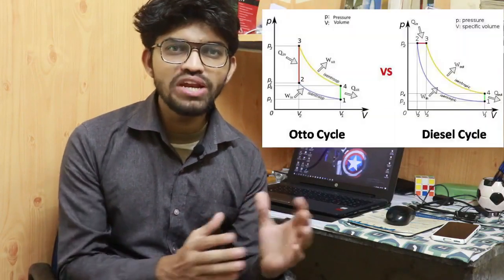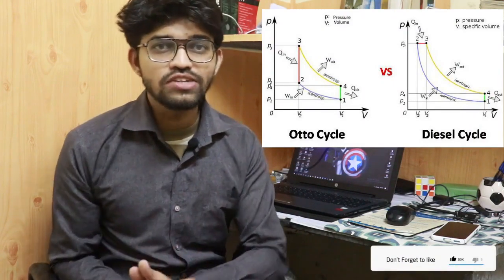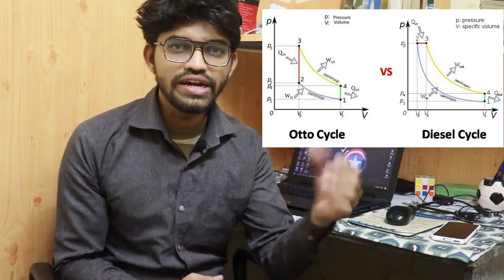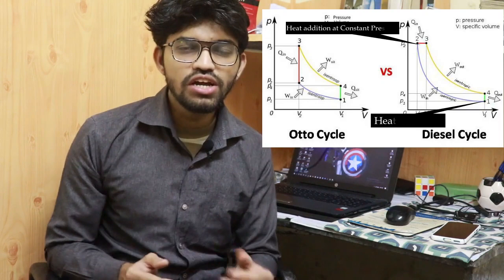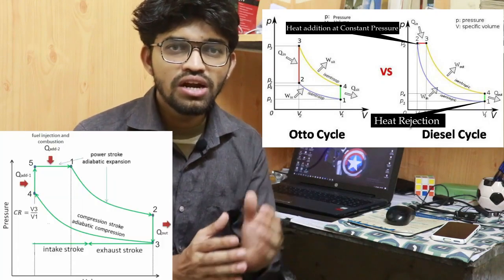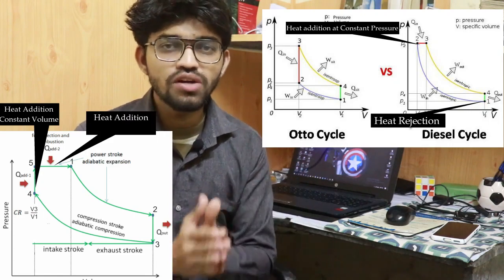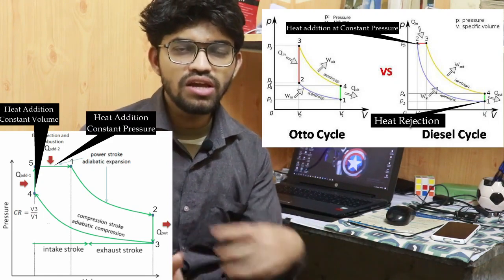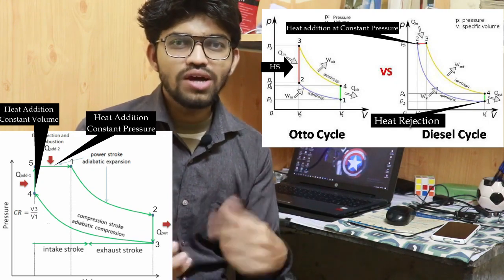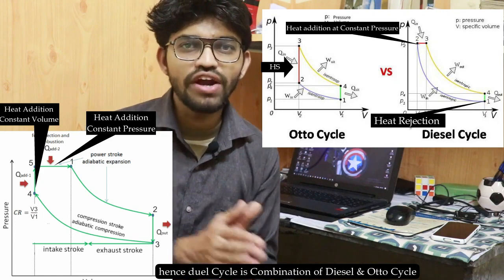The dual cycle is the combination of the Otto cycle and the Diesel cycle, and can also be considered as a modification of the Diesel cycle — which is why it is sometimes called the semi-diesel cycle. In the Diesel cycle, heat gets added during constant pressure and rejected during constant volume. In the dual cycle, the heat addition part is modified: heat is first added during constant volume and then again during constant pressure. That is why this cycle is called a combination of the Otto and Diesel cycles.